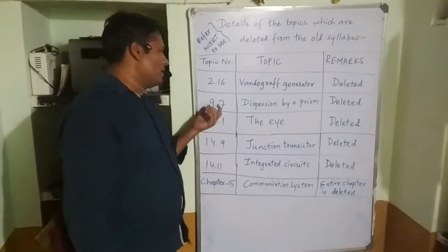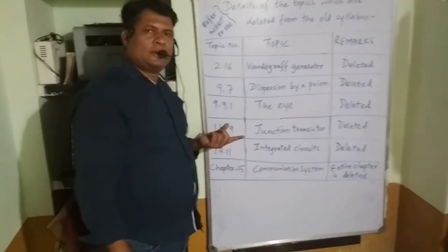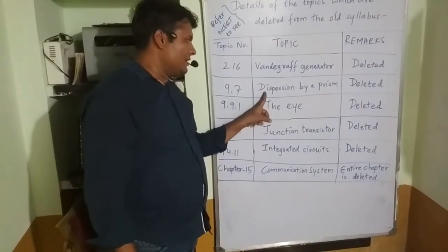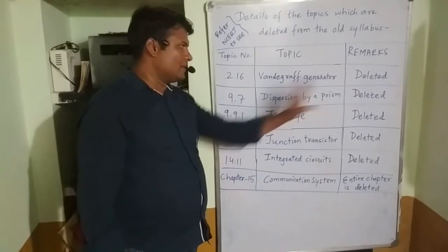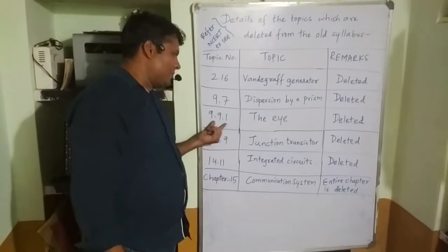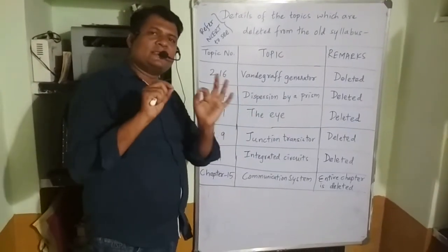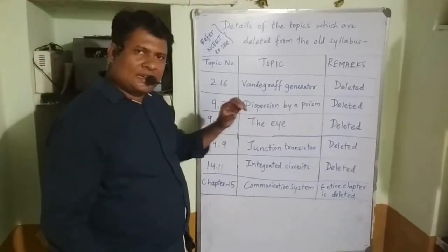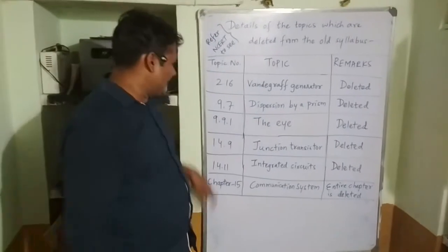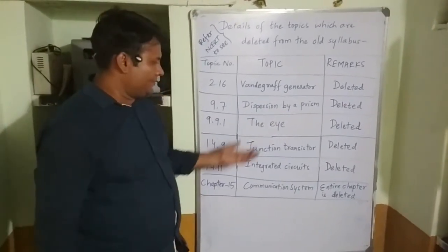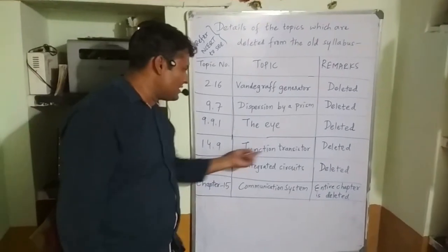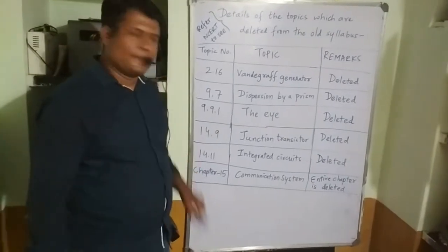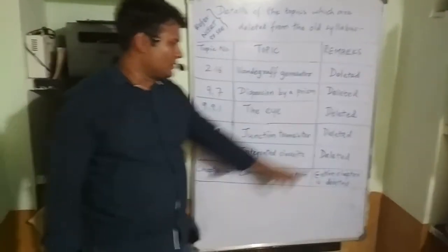From the ninth chapter, Ray Optics and Optical Instruments, the concept of Dispersion by a Prism has been removed and deleted. Also from the ninth chapter, the concepts related to the eye — such as defects of vision like myopia — have been deleted. From the fourteenth chapter, Semiconductors, the Junction Transistor topic has been deleted, and Integrated Circuits is also deleted.